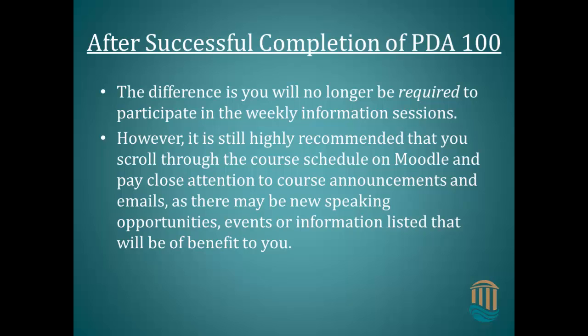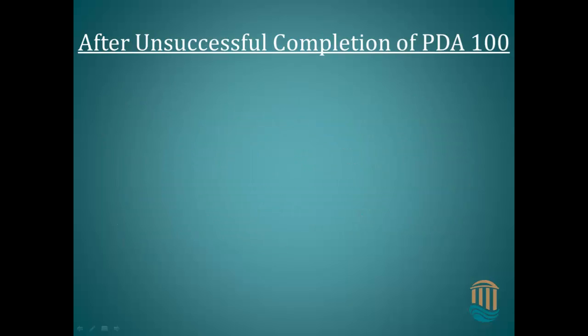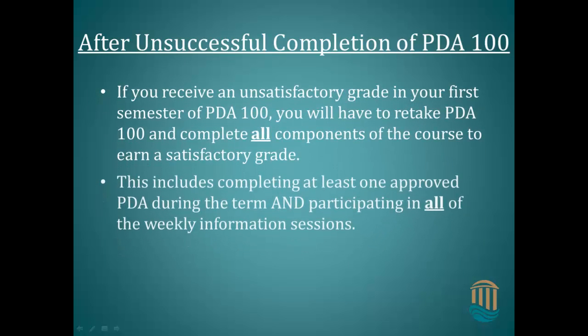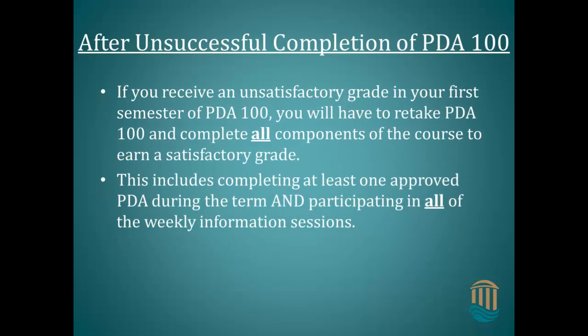Next, we need to discuss what happens if you complete PDA 100 with an unsatisfactory grade. If you receive an unsatisfactory grade in your first semester of PDA 100, you will have to retake PDA 100 and complete all components of the course to earn a satisfactory grade. This includes completing at least one approved PDA during the term and participating in all the weekly information sessions.